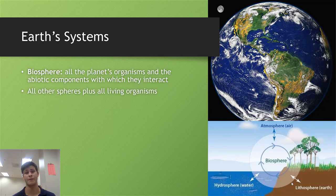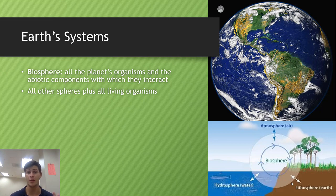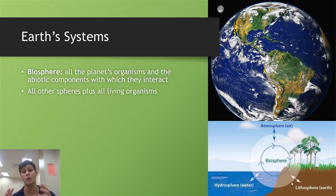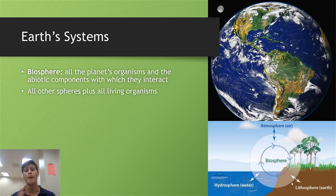Finally, we have the biosphere. The biosphere is broadly referred to as all of the planet's organisms and the abiotic components — meaning the other three systems with which they interact. So it is not just everything that is alive on the planet; it is also an interaction with the lithosphere, the atmosphere, and the hydrosphere. Think of the biosphere as all the other spheres plus living organisms.